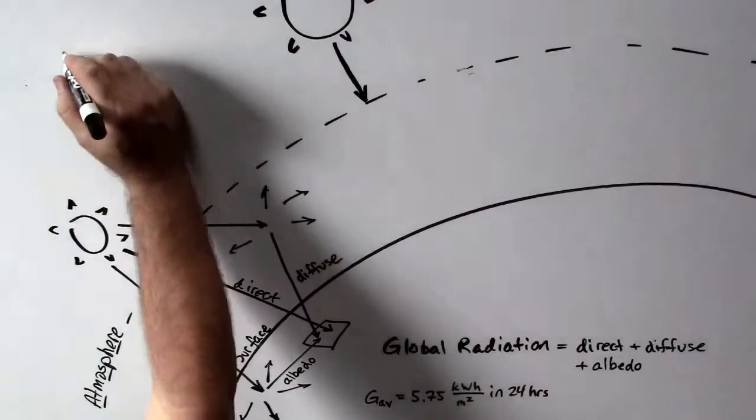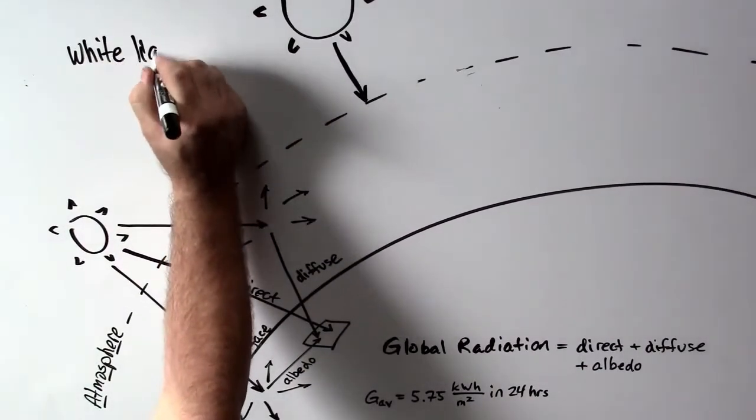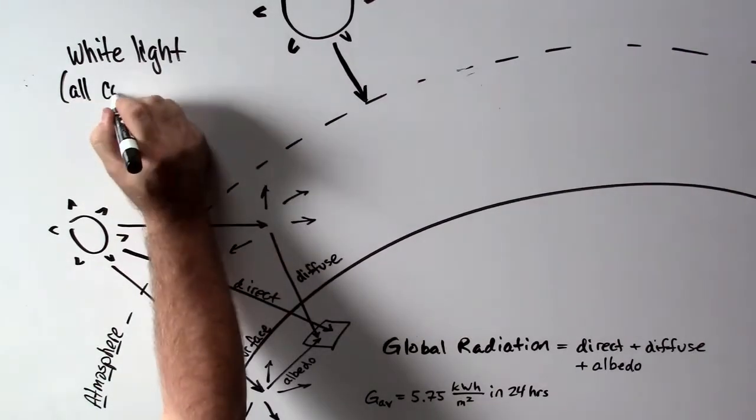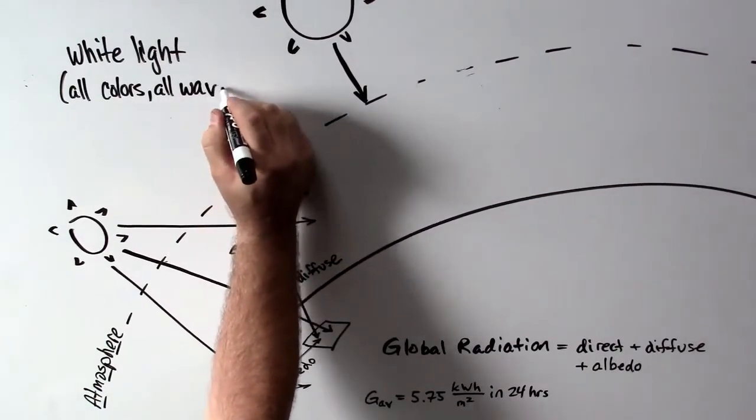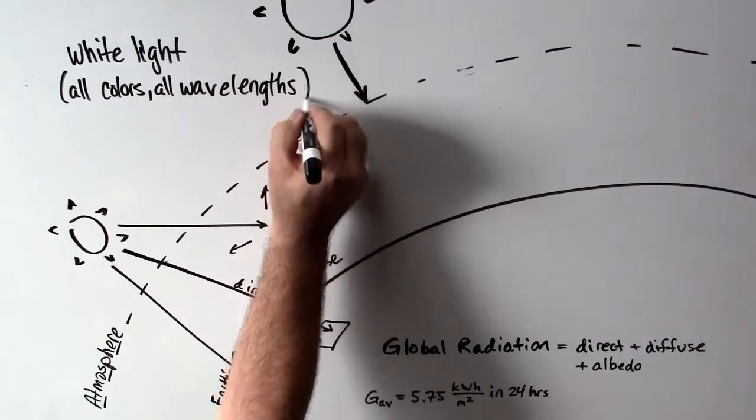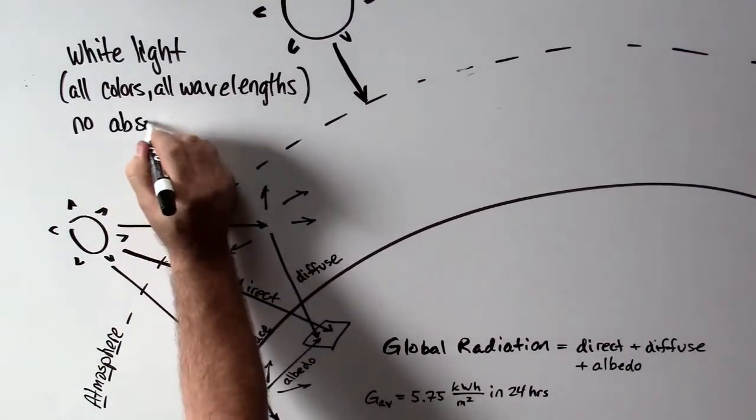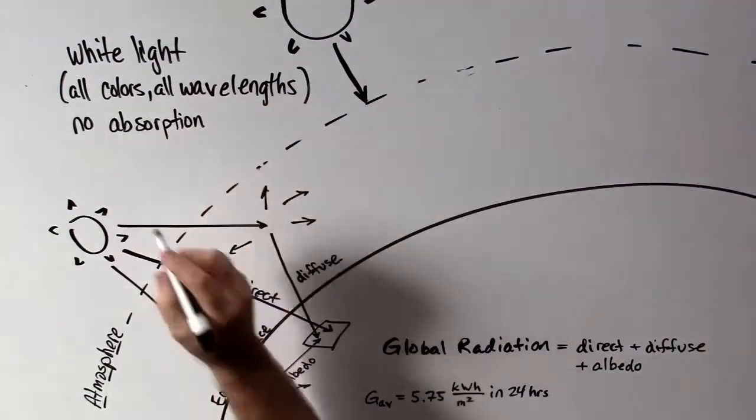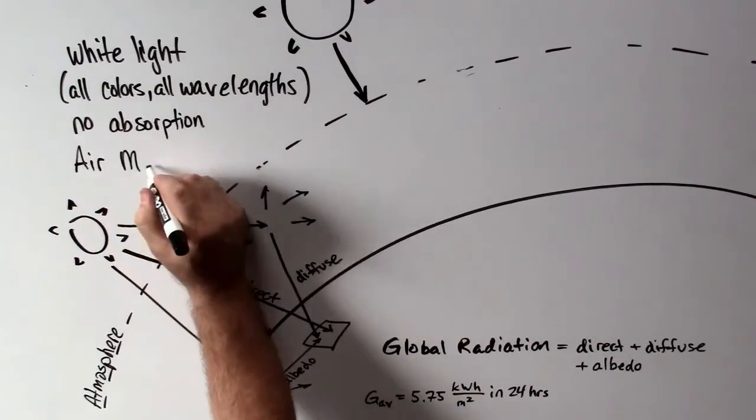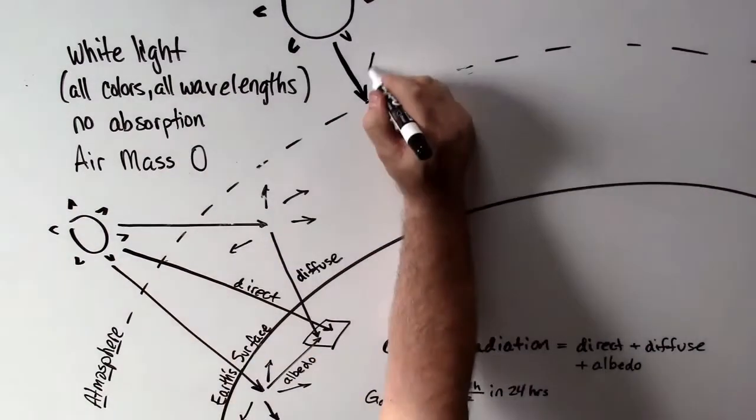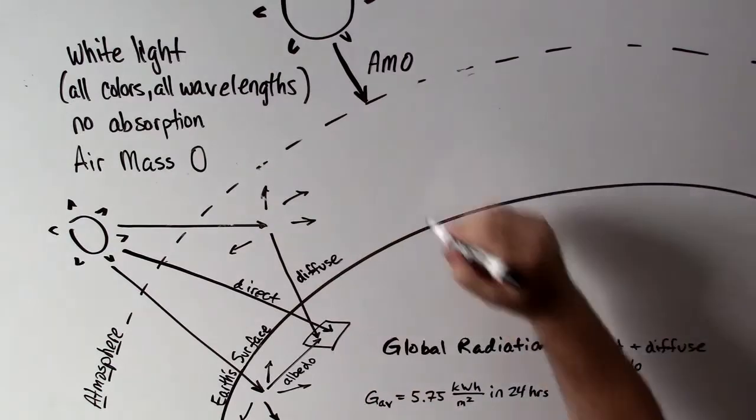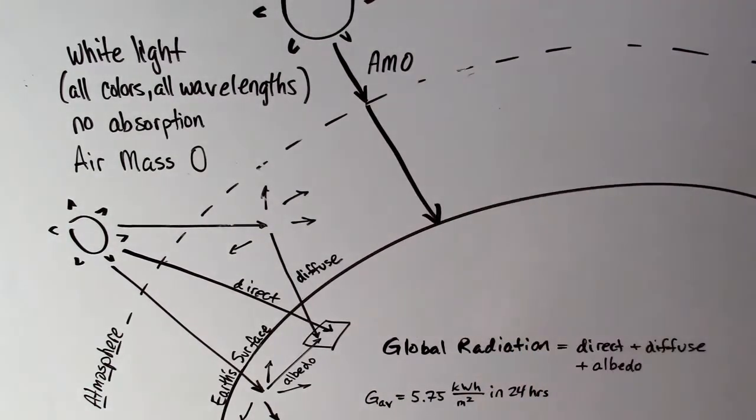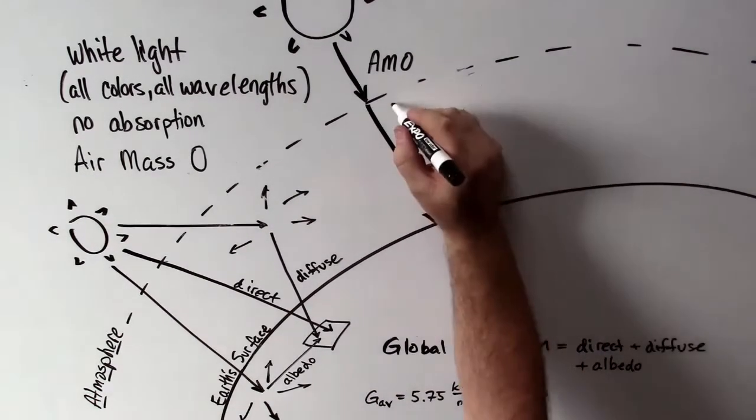Now, the color mixture, or the color content, or the spectral content of the light that comes from the sun also varies. When it comes out of the sun, the light has all the colors. It's called white light—it has all the wavelengths, and at this point has been through no absorption by the atmosphere. So we say that it has been through zero air mass and therefore zero absorption. We call that AM0, to stand for air mass zero.